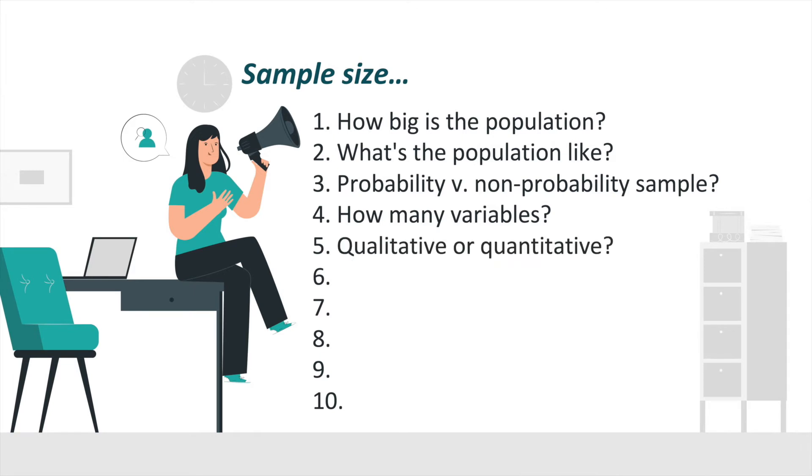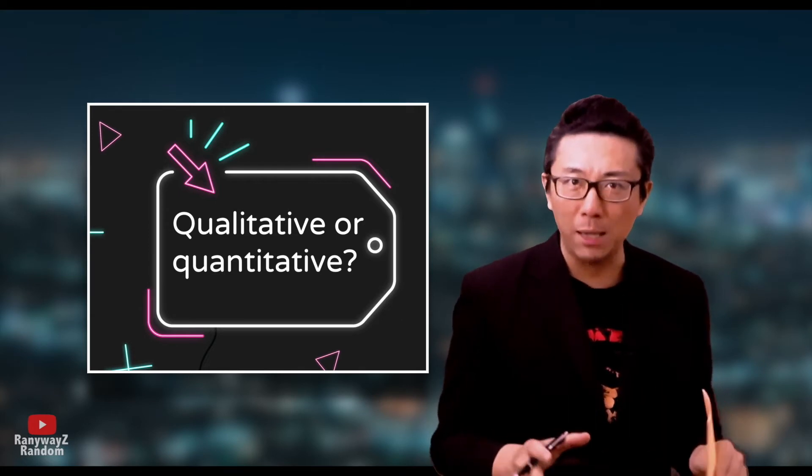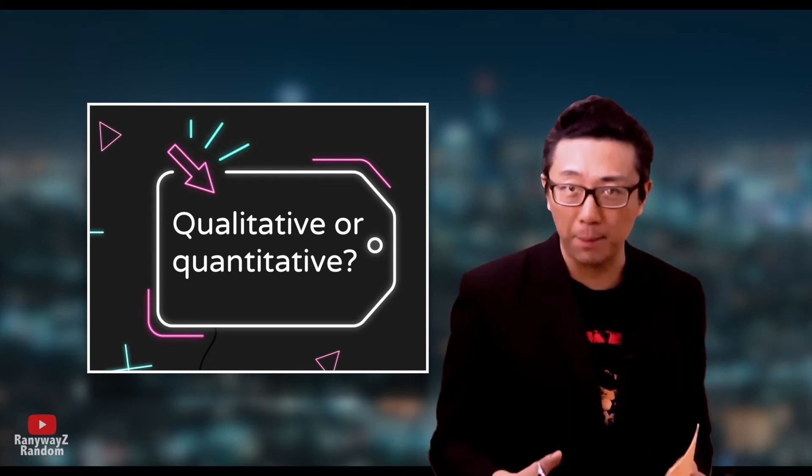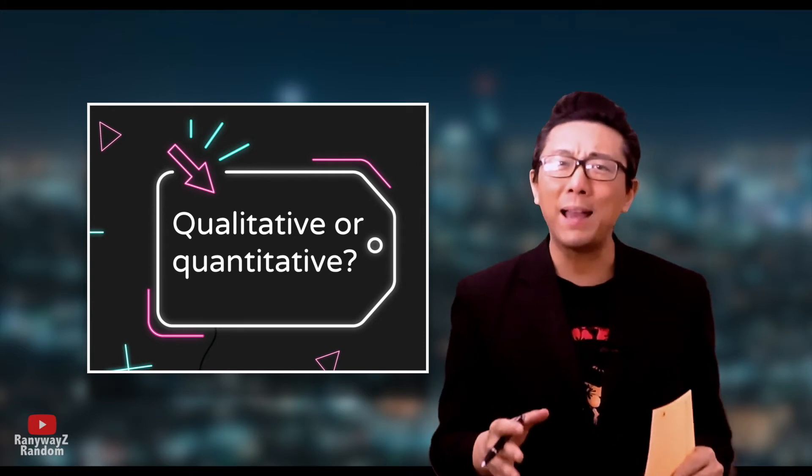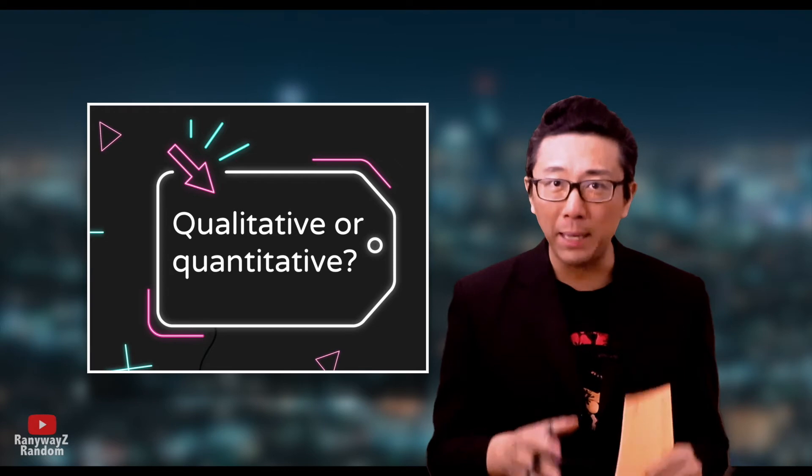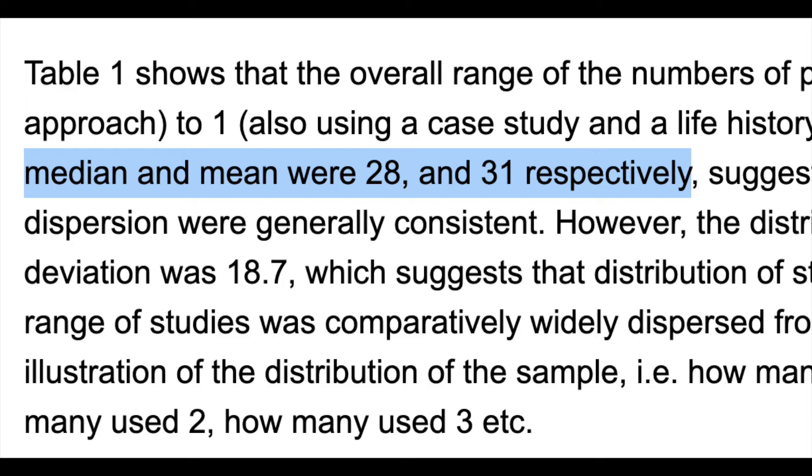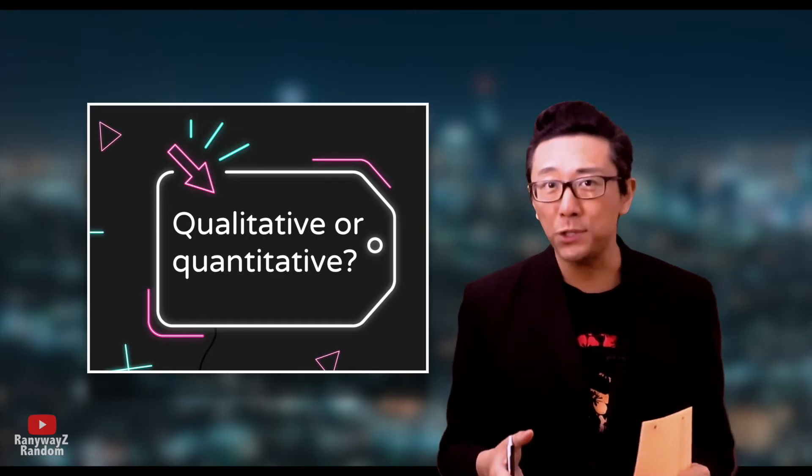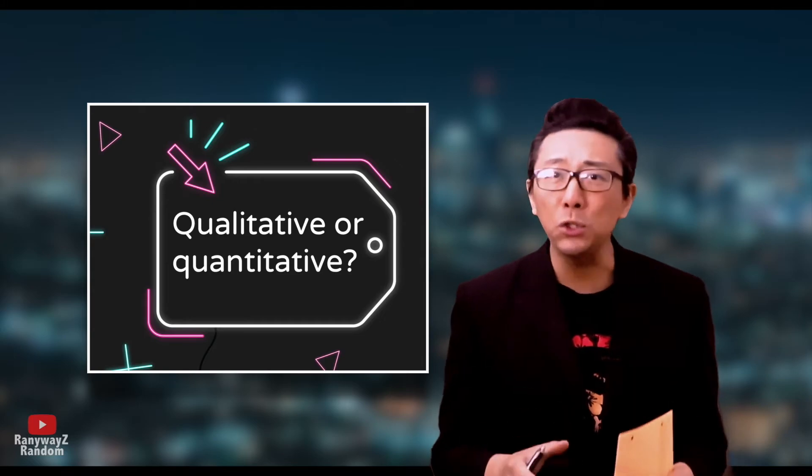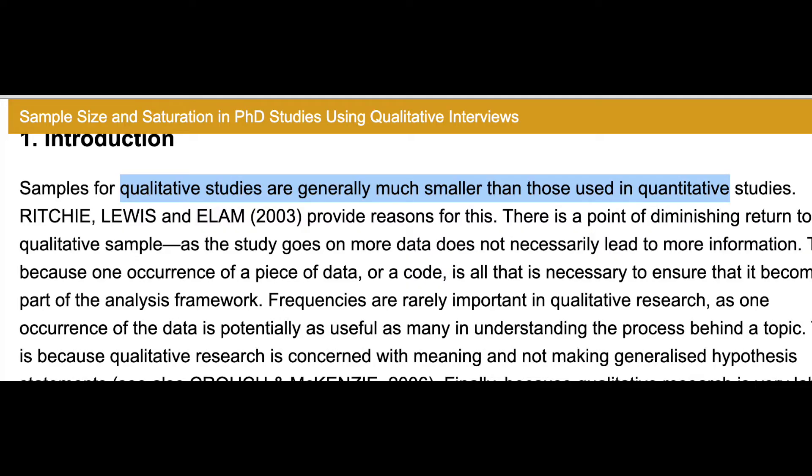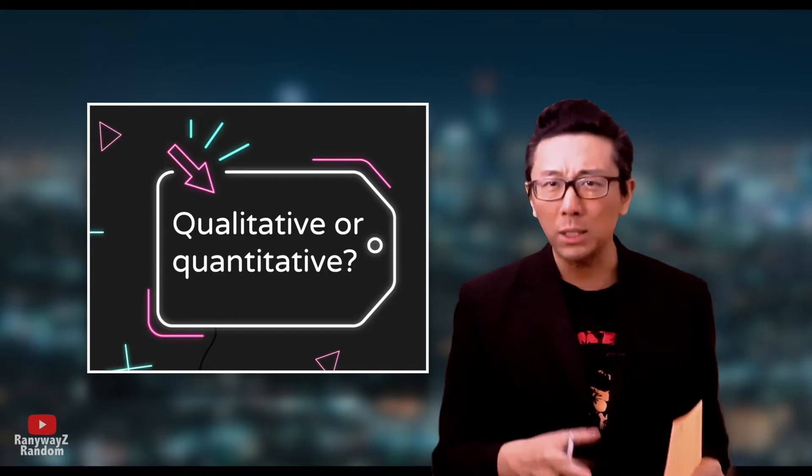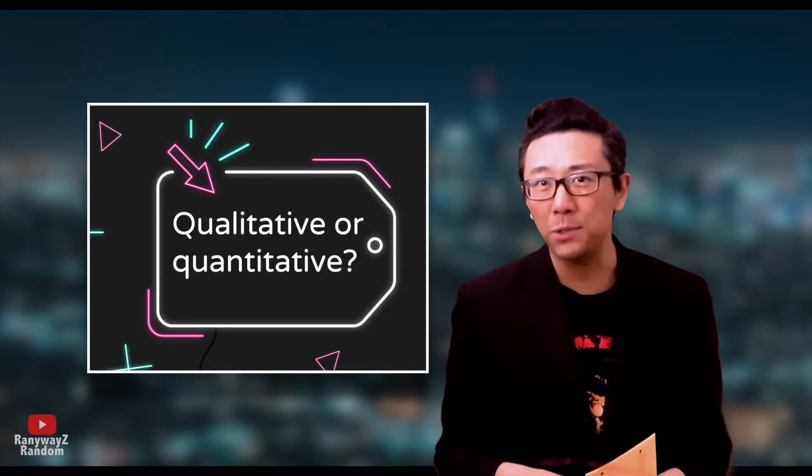Consideration number 5. Is the study qualitative or quantitative? So this is another obvious one. Generally speaking, most of the time, qualitative studies call for a much smaller sample size compared to quantitative studies. People have actually measured this. People counted on the basis of published research and found that the median and average sample sizes for doctoral research in the UK, which used a qualitative research method, was 28 and 31 respectively. I didn't find an average sample size for quantitative studies, but researchers do acknowledge that sample sizes for published quantitative studies are likely much larger. So qualitative studies, smaller samples, quantitative studies, bigger ones.